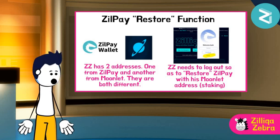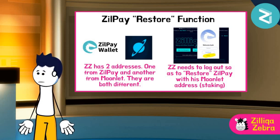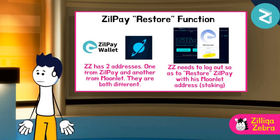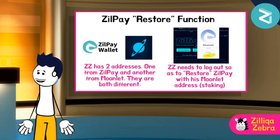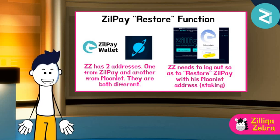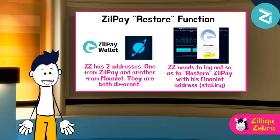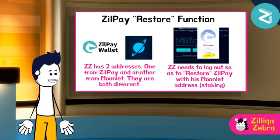Zilliqa Zebra will first need to understand how to use the restore function on his ZIL Pay. For example, Zilliqa Zebra already has a ZIL Pay wallet which he accesses via his browser extension. He realizes that the ZIL Pay address is different from the address on his Moonlit wallet. In order to migrate or transfer his staked ZIL, he needs to log out of his ZIL Pay wallet, then restore his ZIL Pay with his Moonlit address.